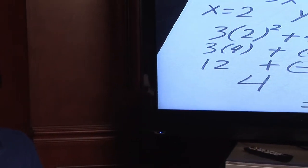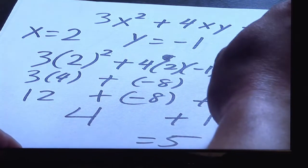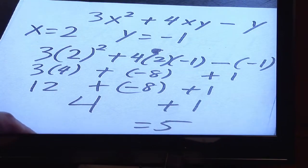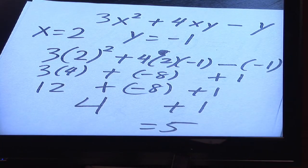Take a look at this example here. You're being asked for the expression 3x squared plus 4xy minus y, to be able to plug in 2 where the x is and negative 1 where the y is.